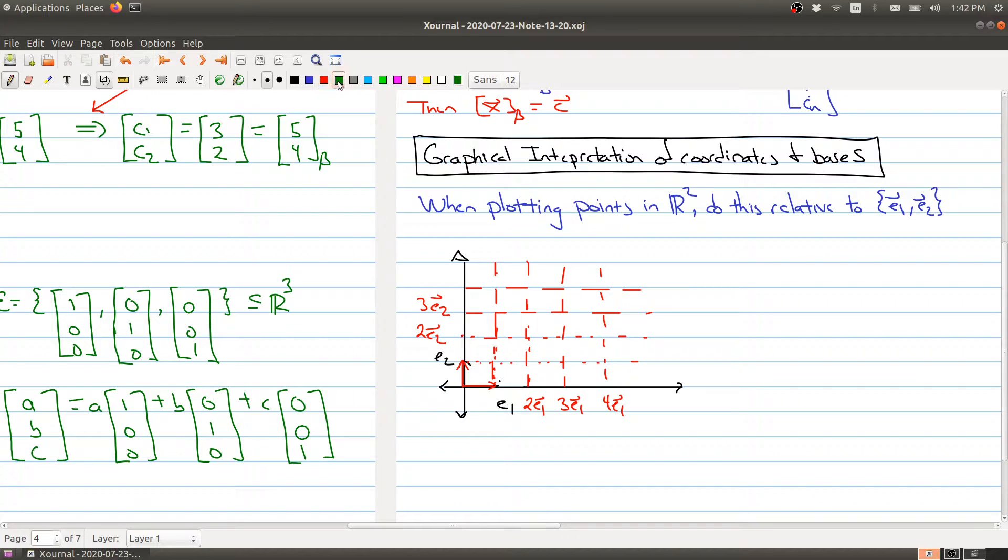So now let's say we look at the vector, the vector 1, 3, when we usually plot it. Vector 1, 2 would be right here, this green arrow.